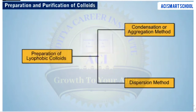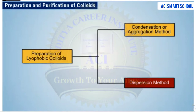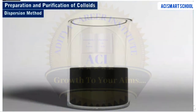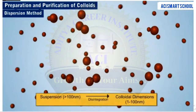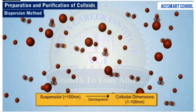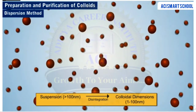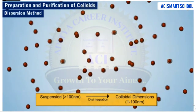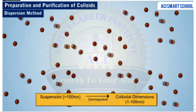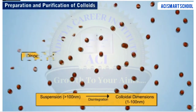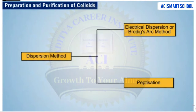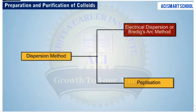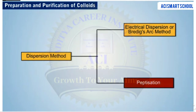Let us now discuss the second category, dispersion methods for the preparation of colloids. As the name suggests, in these methods, bigger particles of a substance, like a suspension, are disintegrated into the particles of colloidal dimensions. The two common dispersion methods are electrical dispersion or Bredig's arc method, and peptization.